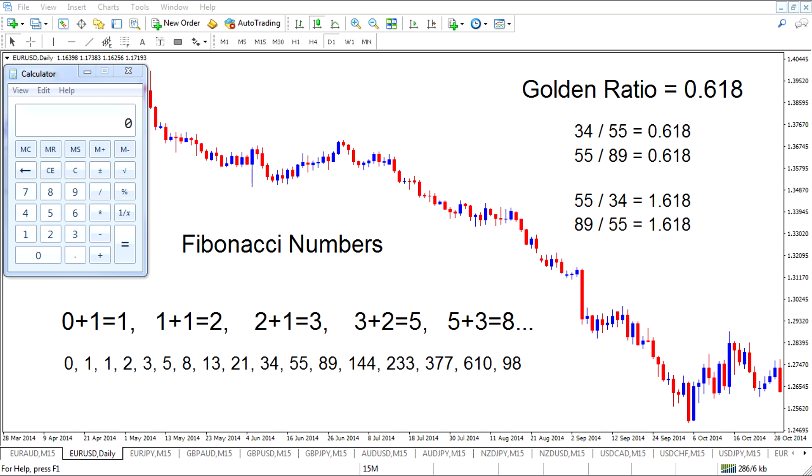First of all, we're going to take a look at the bottom here. Now I've got this label on the chart, Fibonacci numbers, and underneath we have something called the Fibonacci sequence. And the Fibonacci sequence goes 0, 1, 1, 2, 3, 5, 8, 13, 21, 34, 55, 89, 144, 233, 377, 610, and 987, and so on.